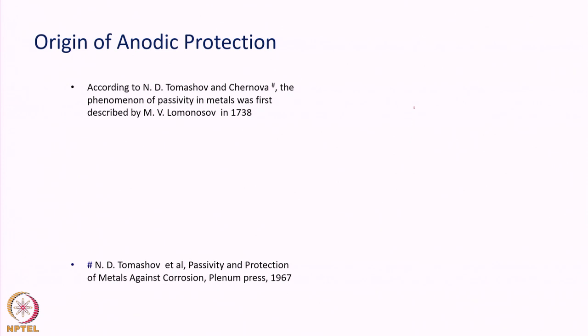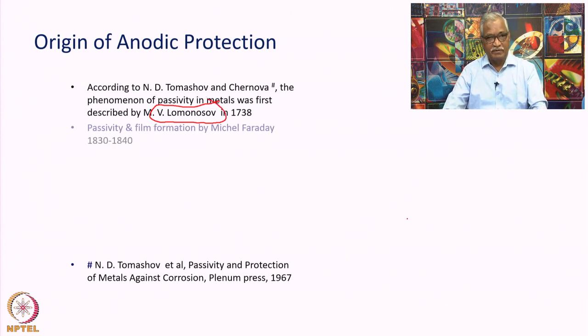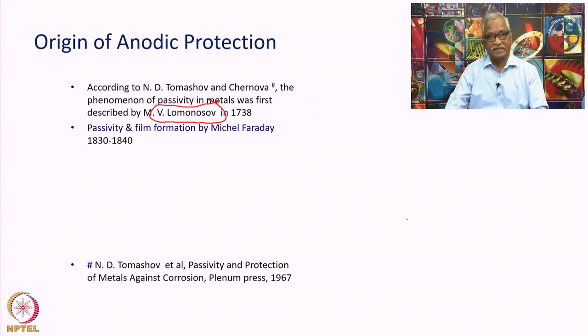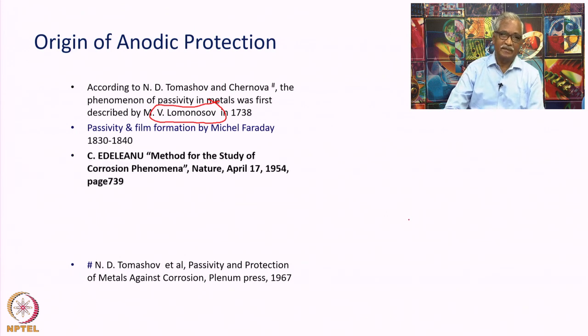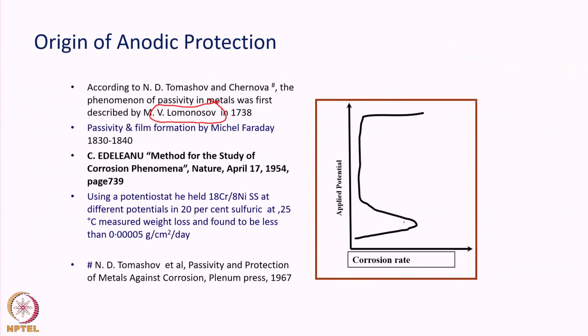Let us start with a perspective on anodic protection — where it started and how it became a technology. Anodic protection has its origin in the discovery of passivity of metals by Lomonov in the year 1738. Later, it was Michael Faraday who suggested that film formation is the main reason for passivity of metals. However, anodic protection as an engineering concept can be attributed to C. Edilenu, who first published a paper in Nature in the year 1954.